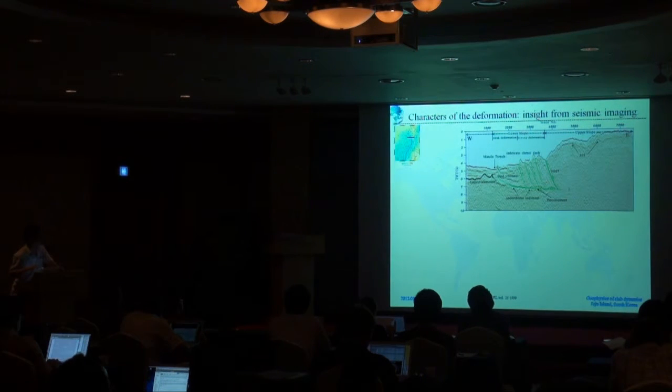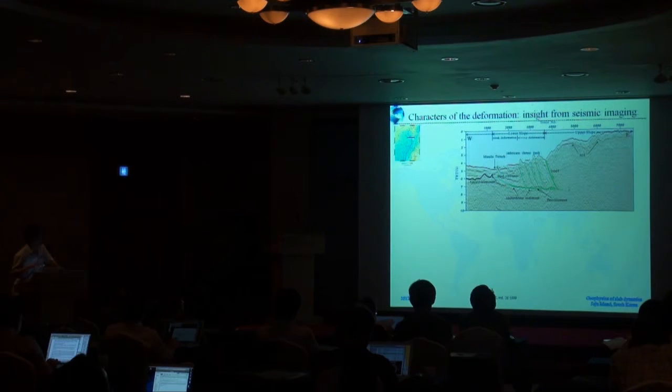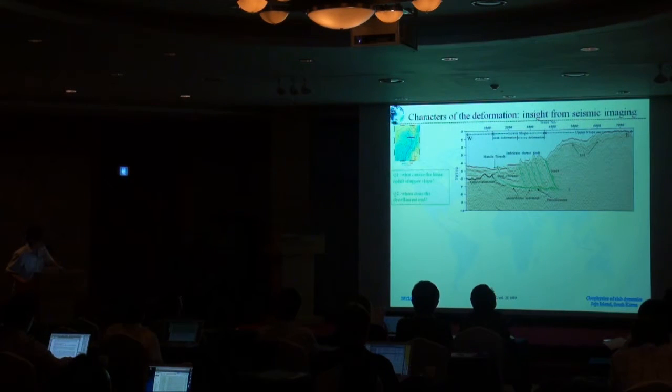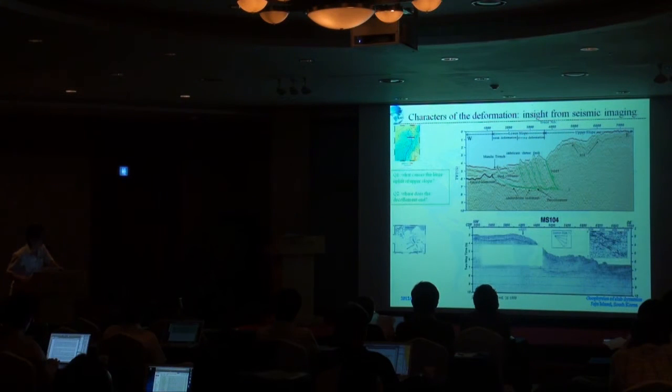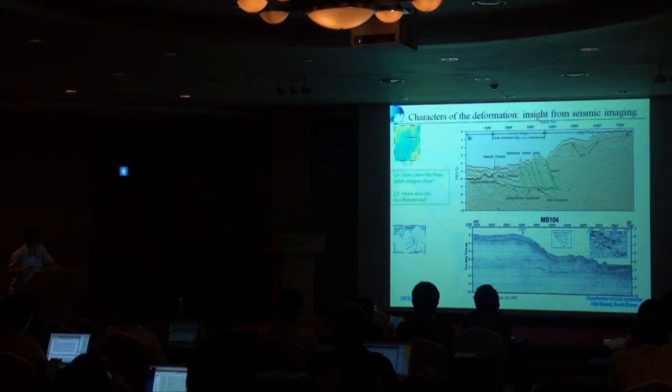When we look into the seismic data, the seismic data profile imaging of this area, due to the complex overriding structure, the imaging is not so well. It leads to two questions. The first is what causes a huge uplift over this arc slope, and the other question is where does the decollement end? So we compared it to one seismic profile we collected in the Nankai Trough. The seafloor morphology is similar and also the acquisition parameters are similar.